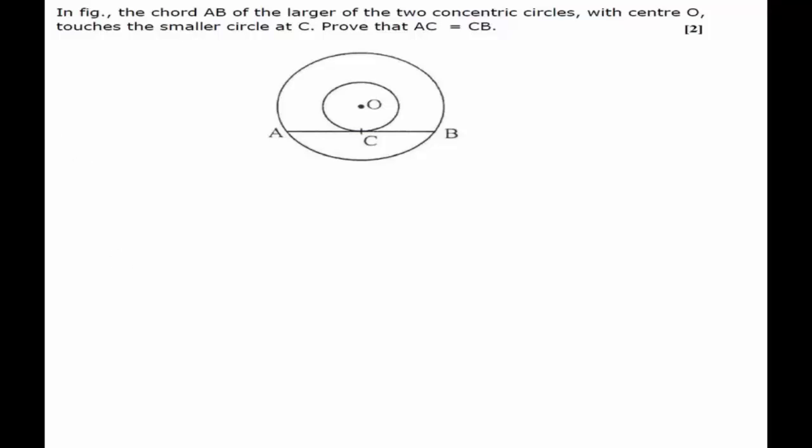Hello students. In this example, we have been given two concentric circles. The chord AB of the larger circle with center O touches the smaller circle at C, and we have to prove that AC is equal to CB.